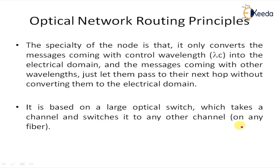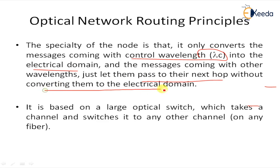In the optical network, a node is also considered a routing node. Its specialty is that it converts incoming messages from various sources — controlling the wavelength into the electrical domain — and then passes them to the next hop. Suppose multiple intermediate nodes are connected between source and destination; the data passes through these intermediate nodes, hop by hop, to reach the actual destination.